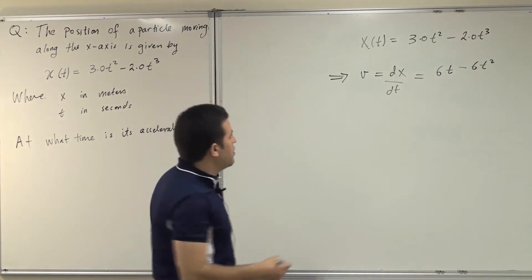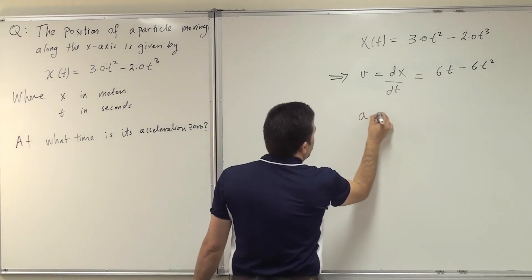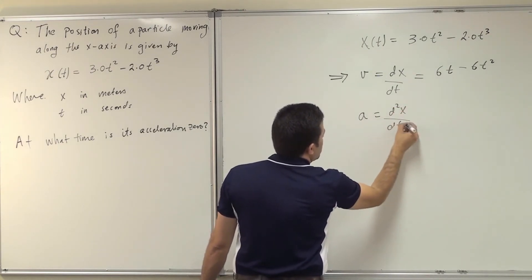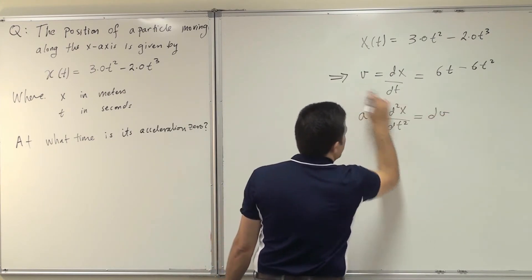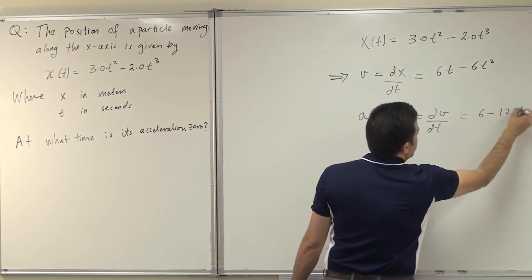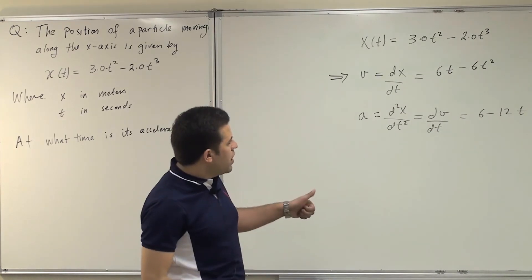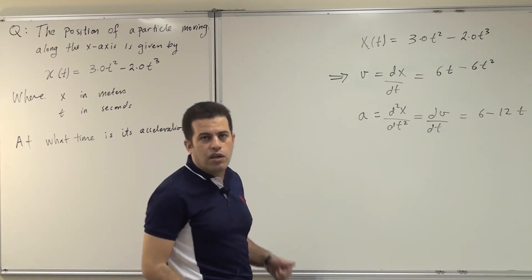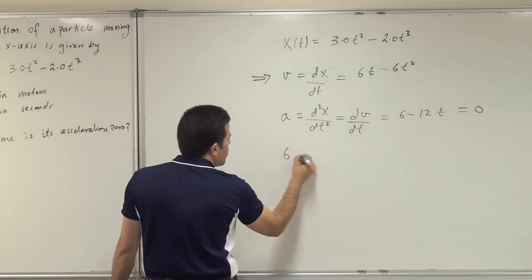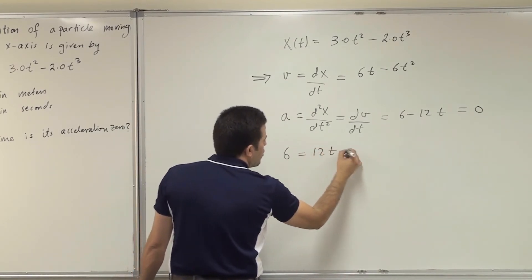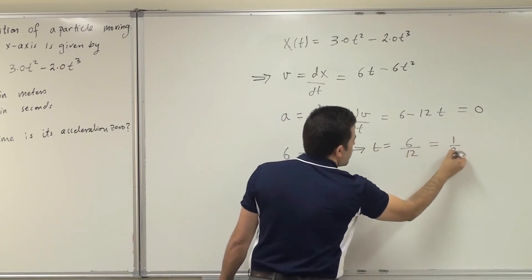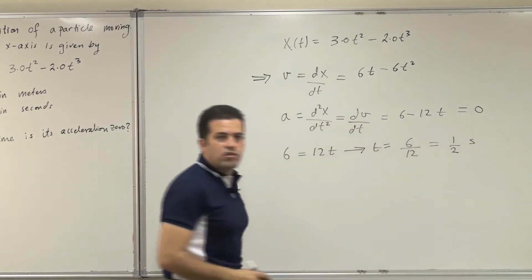Now I need to derive again to get acceleration. Acceleration is the second derivative, d squared x by dt squared, or the first derivative of velocity dv by dt, which gives 6 minus 12t. To find the time when acceleration equals zero, I equate it to zero: 6 equals 12t, which gives t equals 6 divided by 12, which is half a second. Thank you.